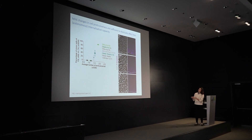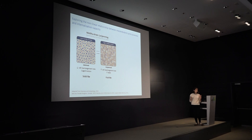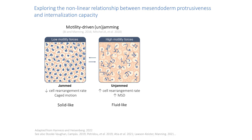What you might also have noticed is that we have quite small changes in the number of protrusions per cell but always quite dramatic differences in their capacity to internalize — the responses don't seem linear. This was suggestive of a process described theoretically and explored in vitro called motility-driven unjamming, where the state of your tissue can change depending on the magnitude of your motility forces. If cells have very high motility forces they can drive rearrangements and displace within the tissue, giving a high mean square displacement — making the tissue fluid-like.